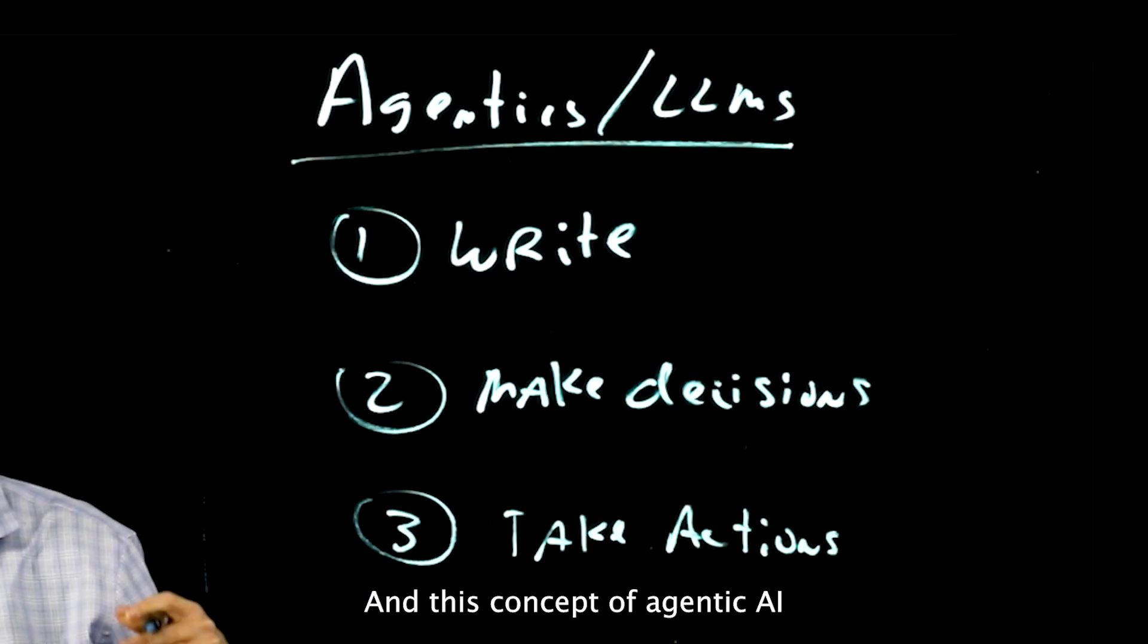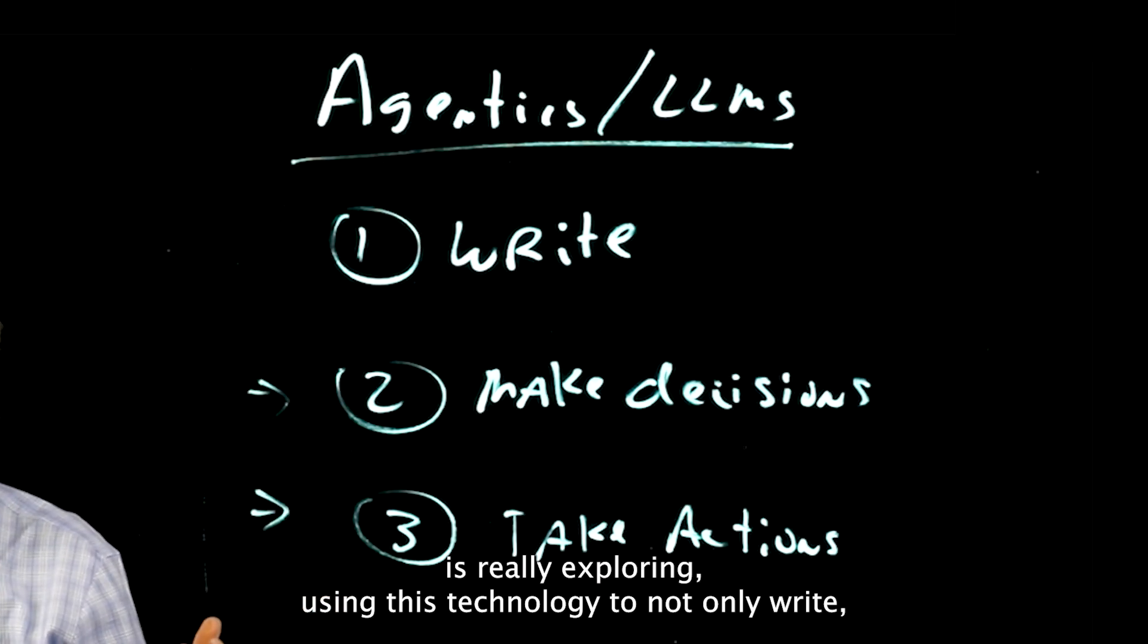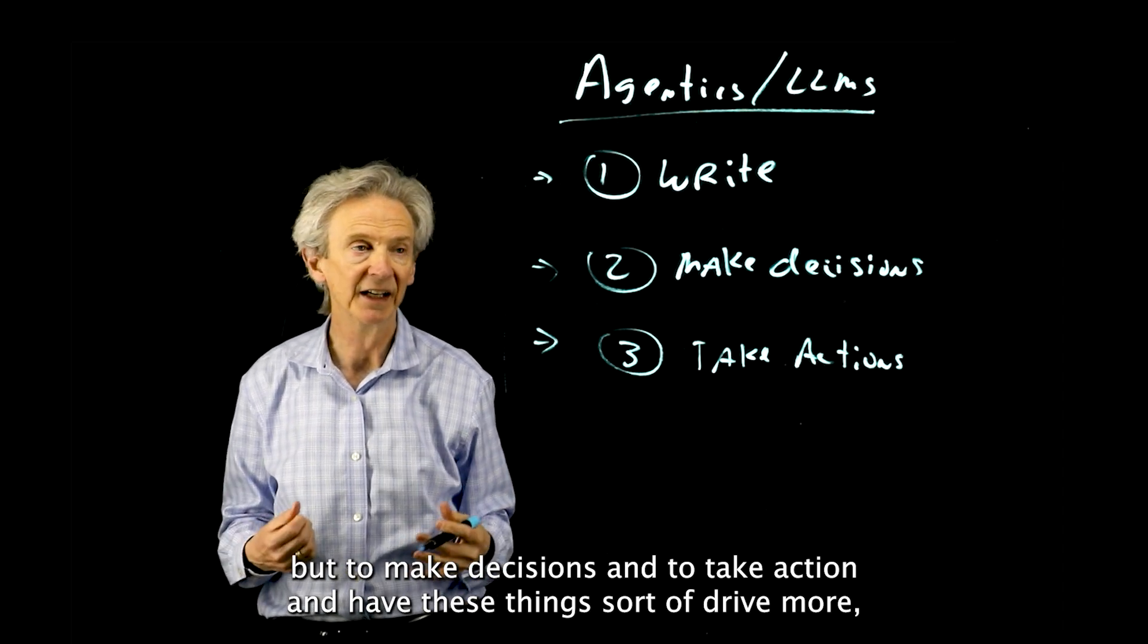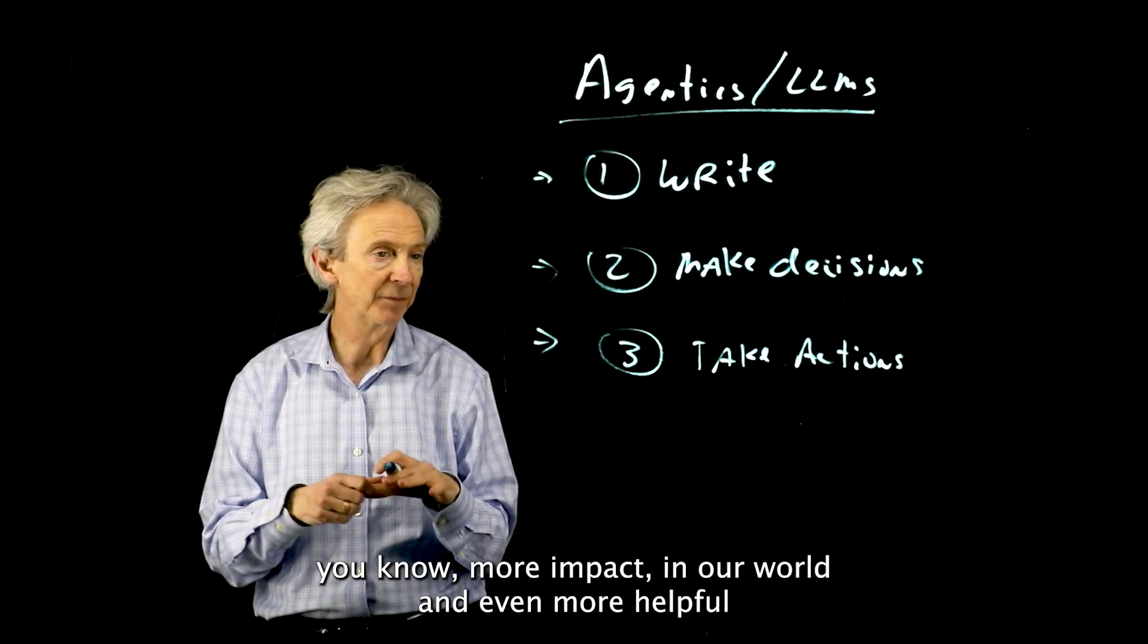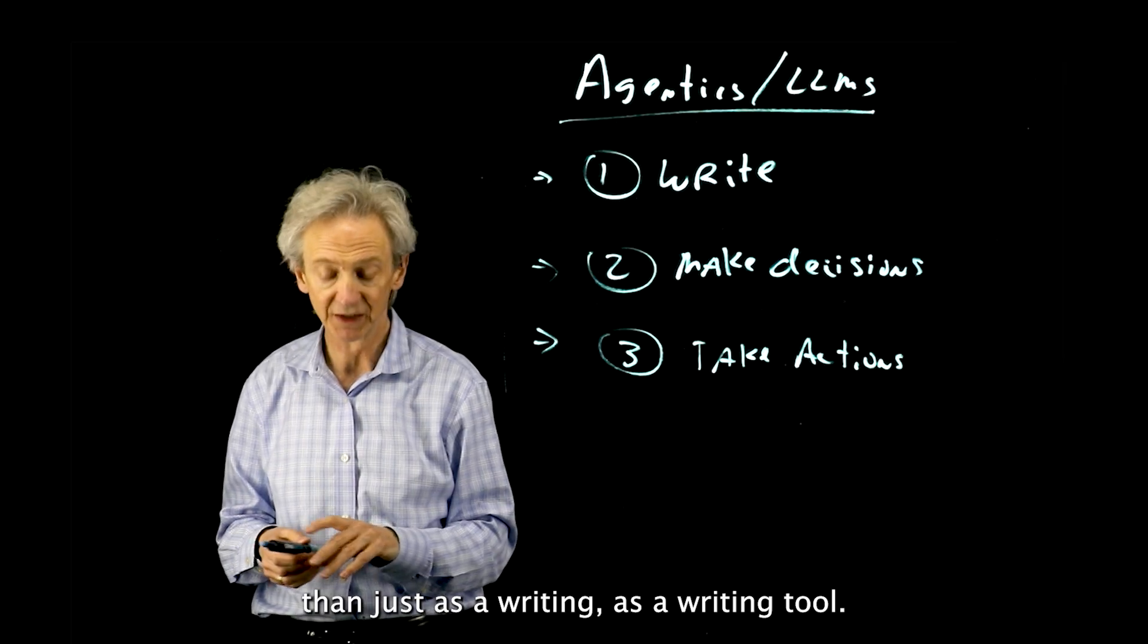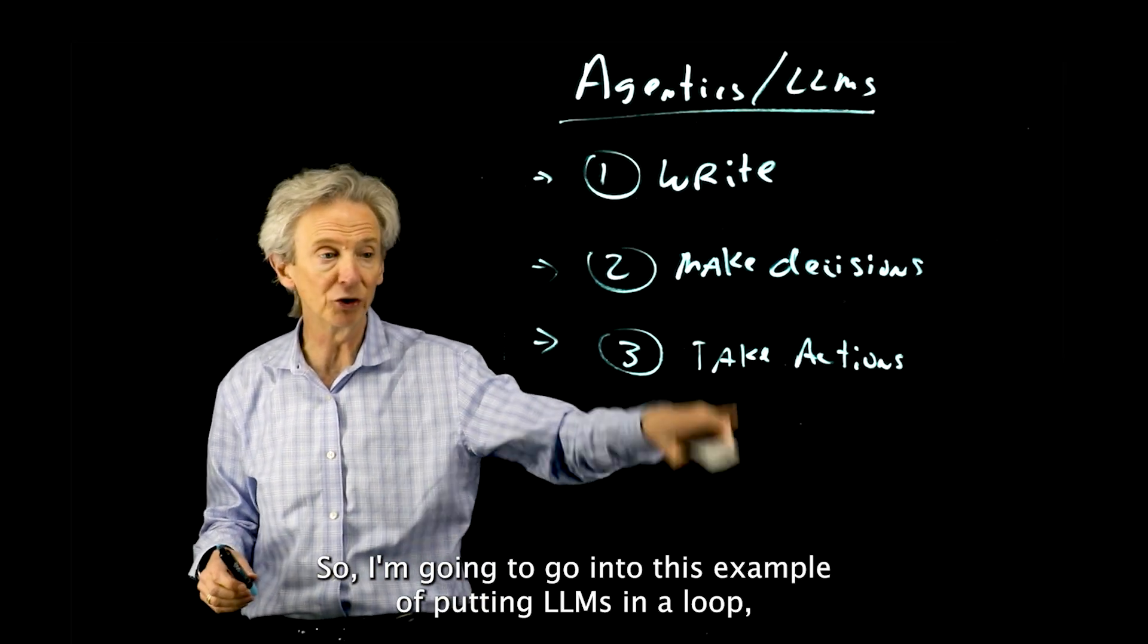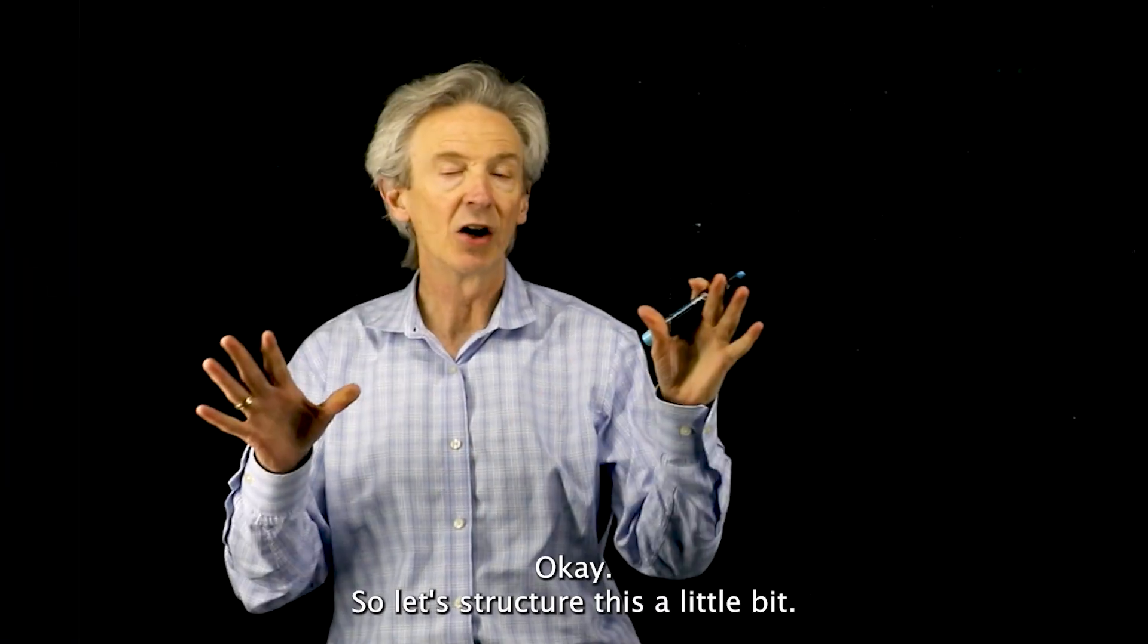And they can also take action. This concept of agentic AI is really exploring using this technology to not only write but to make decisions and to take action and to have these things drive more impact in our world and be even more helpful than just as a writing tool.